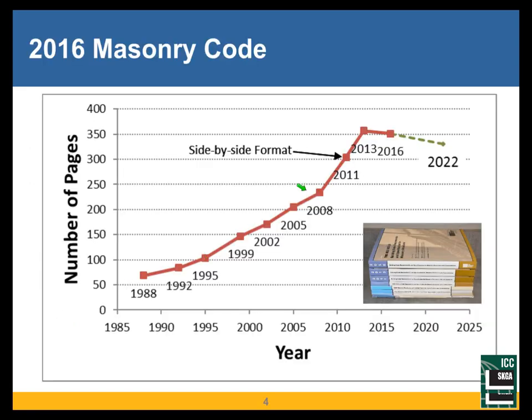As was mentioned, I was chair of the 2016 code committee from 2013 to 2016. So I'll show you the two greatest accomplishments of my career, in my opinion. One is that the 2016 masonry code had slightly fewer pages than the 2013 edition, after a long and steady upward trend. I don't know if it's the only structural code to have fewer pages than the previous edition, but certainly a rare occurrence.